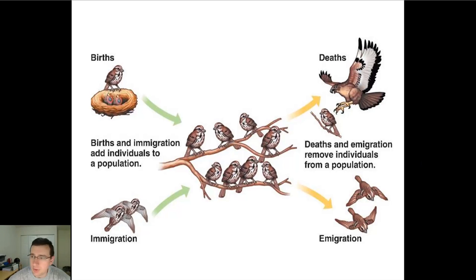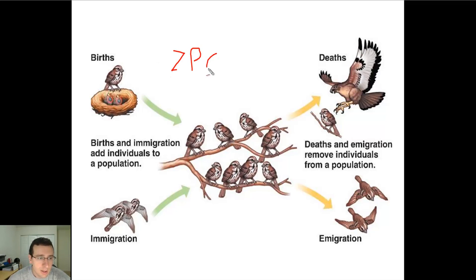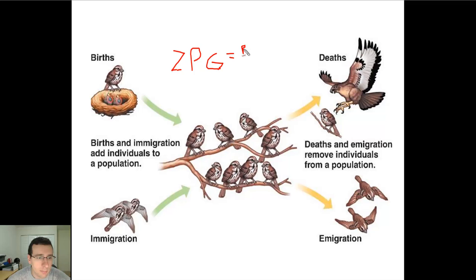Of course, if the death and emigration rate exactly matches the birth and immigration rate, then you are in a situation where the population is not growing or shrinking at all. We call that in ecology a zero population growth rate, sometimes referred to as zero PG — zero population growth. So zero population growth is a situation where birth plus immigration exactly matches death plus emigration, and that population will stay stable. Many populations around the world are exactly like that — neither declining nor increasing, just staying stable.